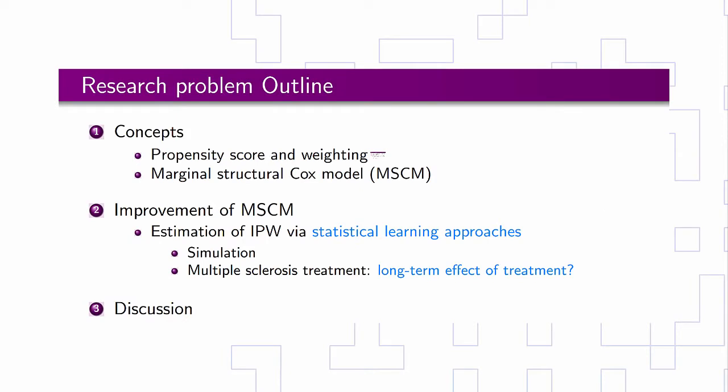Here is the outline of my research project. First, I will talk about some basic concepts. This study is motivated by the analysis of multiple sclerosis data from British Columbia. I will explain why I want to use statistical learning methods to estimate the inverse probability weights for the Marginal Structural Cox Model. To assess the performance of these approaches, I propose to use simulation studies as well as analyzing multiple sclerosis data.